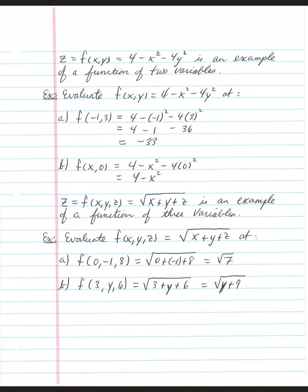Sometimes you will be asked to evaluate functions with a variable left open. That just means don't plug a number in for that particular variable. So x stays the same, y will catch a 0. 0 squared times 4 is all 0. So this function at x, 0 is equal to 4 minus x squared.